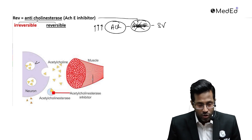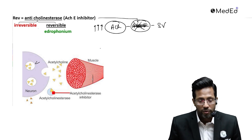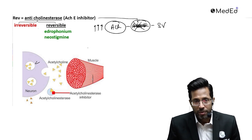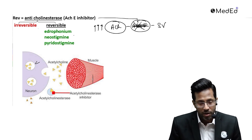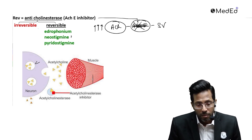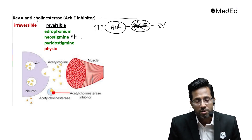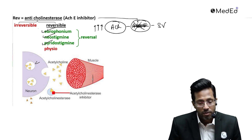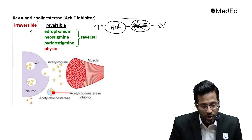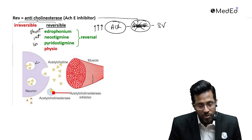For reversible anti-cholinesterases: edrophonium, neostigmine, and pyridostigmine are all three used for reversal, with neostigmine being the most commonly used. There is also physostigmine in this group, but only edrophonium, neostigmine, and pyridostigmine are used for reversal. In terms of duration: edrophonium is short-acting, neostigmine is intermediate-acting, and pyridostigmine is long-acting.